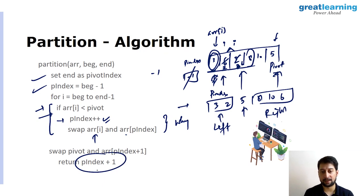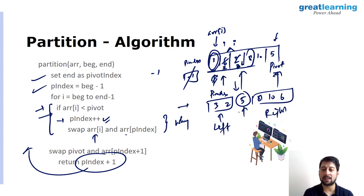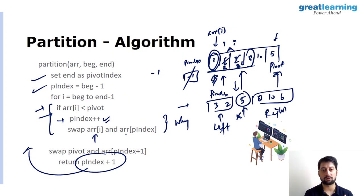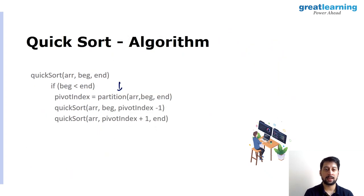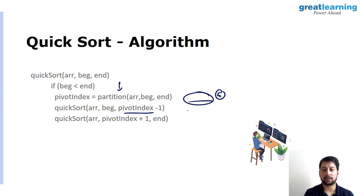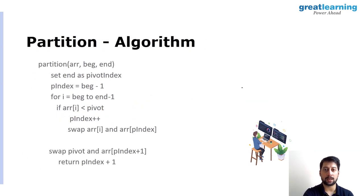Finally, once the entire iteration is complete, we swap the pivot element with the element at pivot_index plus 1. This places the pivot at its correct sorted position. We then return pivot_index plus 1 so that this pivot element is not included in any further recursive calls — the left subarray goes up to pivot_index minus 1 and the right subarray starts at pivot_index plus 1.